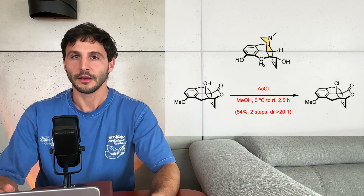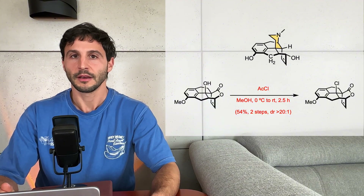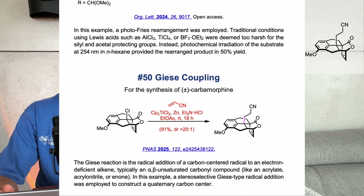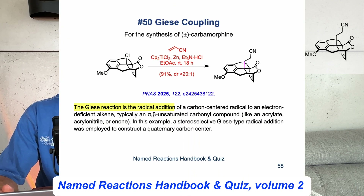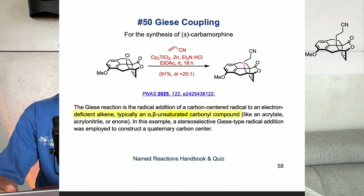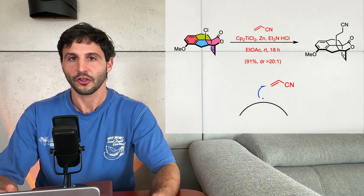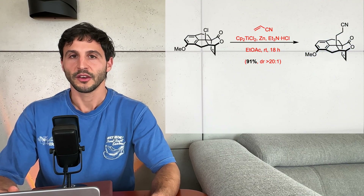To introduce the alkylamine substituent needed to form the piperidine ring of the molecule, the authors employed a Giese-type reaction. The Giese reaction is the radical addition of a carbon-centered radical to an electron-deficient alkene, typically an alpha-beta-unsaturated carbonyl compound like an acrylate, acrylonitrile, or enone. In this case, a stereoselective Giese-type radical addition is employed to build a quaternary carbon center. The reaction proceeds with addition from the convex face of the pentacyclic structure, delivering the product in 91% yield and with a high level of diastereoselectivity.